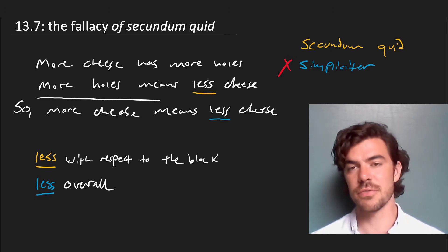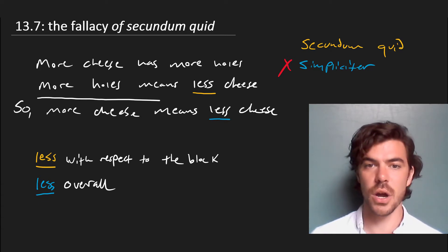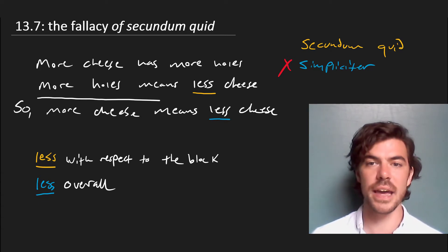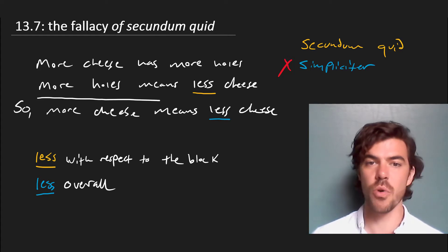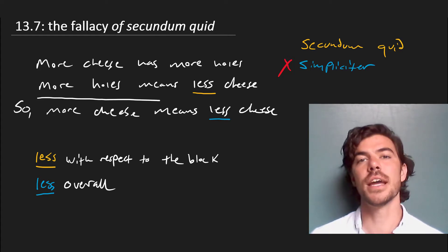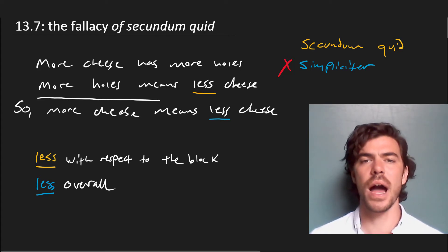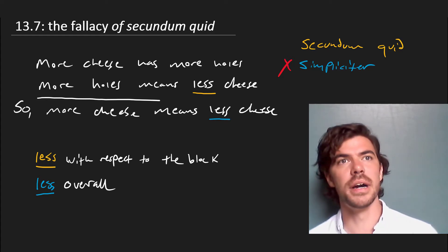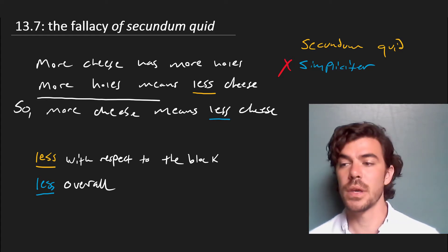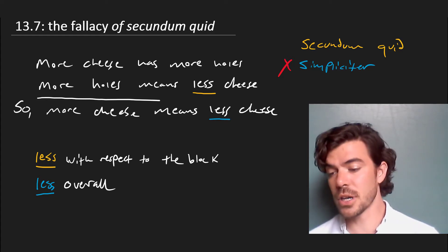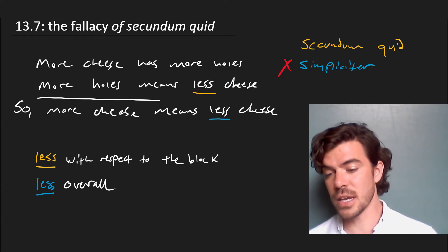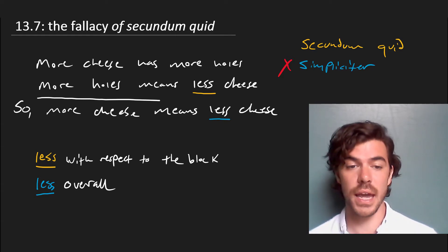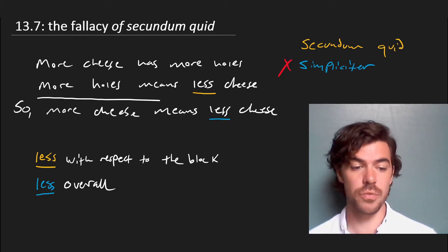That's what makes this a fallacy — the ambiguous term 'less' is being used equivocally, being used in more than one sense. Now you might think you would never fall for that, that it seems like a fun example but so what. Actually, this argument exists in less obviously wrong forms, and you can see them all over the place.